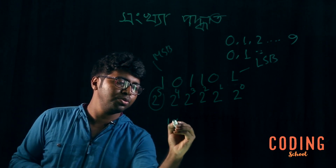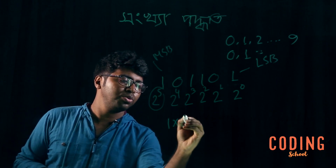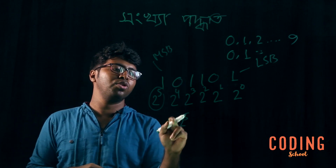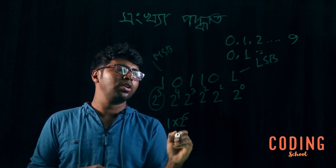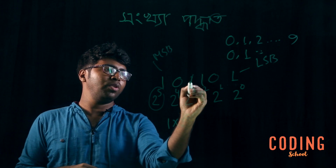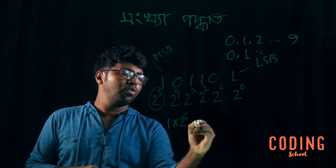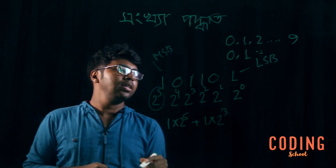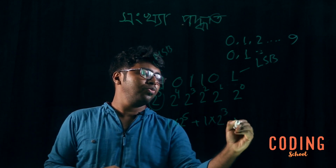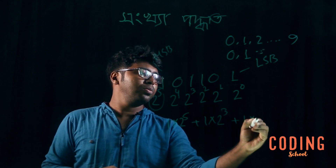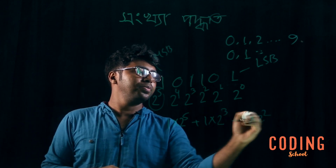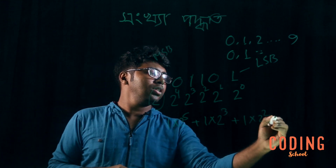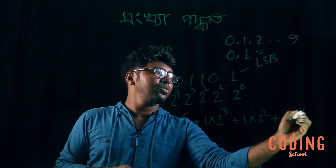The value is 1 into 2 to the power 5, plus 0 into 2 to the power 4 which is 0, plus 1 into 2 to the power 3, plus 1 into 2 to the power 2, plus 1 into 2 to the power 0.